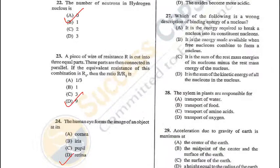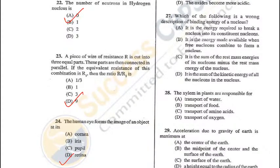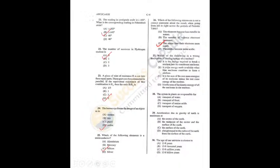Question 27: Which is the wrong description of binding energy of a nucleus? Statement D is incorrect — it states that binding energy is the sum of kinetic energy of all nucleons and the sum of masses of free neutrons and protons. So D is the incorrect answer.